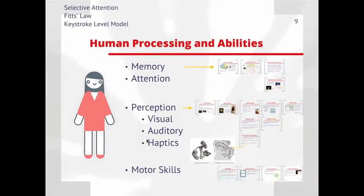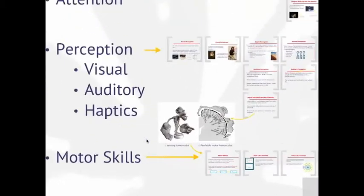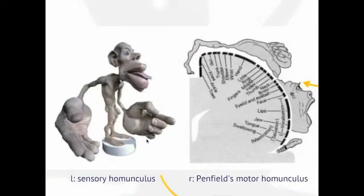The final part we're going to go over is motor skills, and again we're going to come back to this notion of the homunculus. On the right-hand side here we see the motor homunculus.